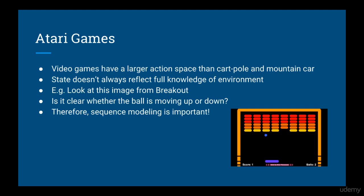After we look at cart pole and mountain car, we'll look at one or more Atari games. Playing video games is an essential step we must take in order to build intelligent agents for the real world. Video games contain a larger set of actions than cart pole and mountain car, and the states don't necessarily reflect full knowledge about the environment. For example, in Breakout, you can't tell whether the ball is moving toward the paddle or away from a static image — so sequence modeling becomes important.